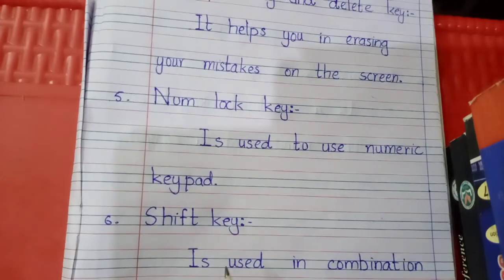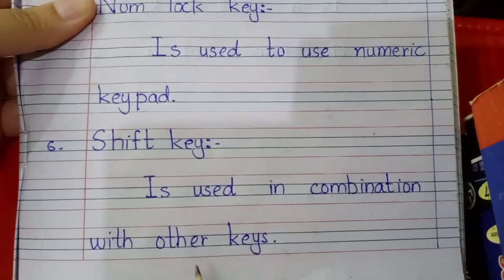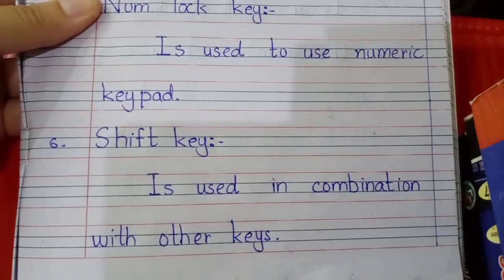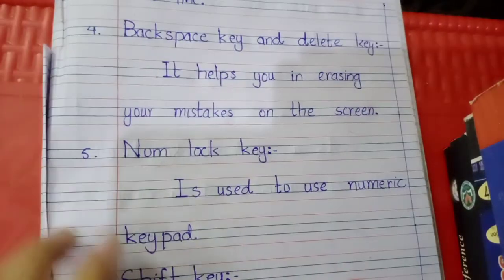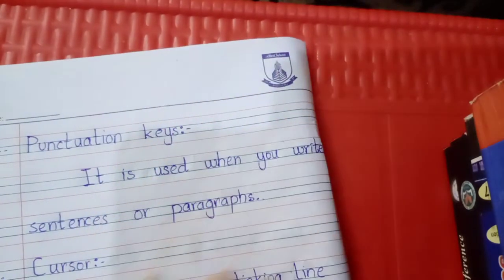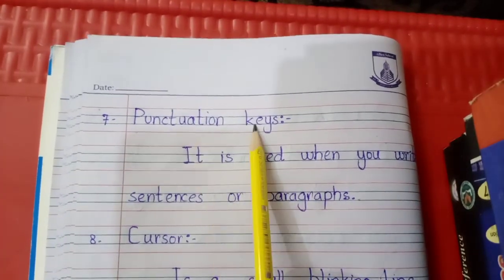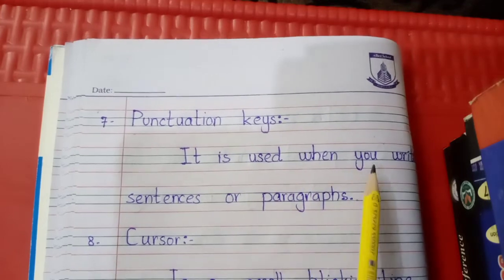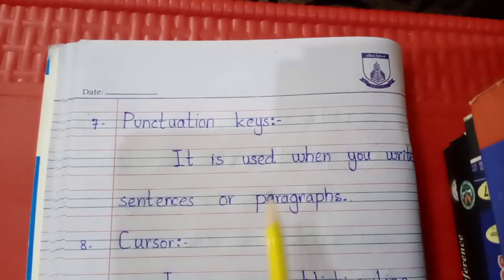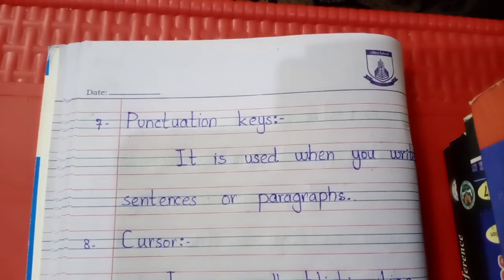The sixth one is Shift Key — Shift Key is used in combination with other keys. These are short definitions written in your copies. The seventh key is Punctuation Key — it is used when you write sentences or paragraphs.